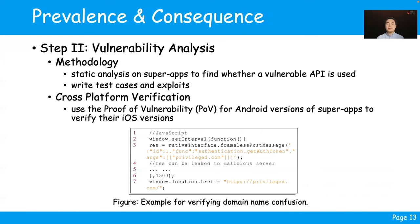Our analysis of domain name confusion is conducted in two steps. First, we use static analysis to determine whether the super app uses a vulnerable WebView event handler. Then, we write test cases and exploits to trigger the vulnerability. We also use proof-of-concept exploits to verify whether the vulnerability exists in the iOS version. This figure illustrates an example to verify the vulnerability for onPageStarted. Note that we have different exploit codes when the WebView Chromium version is greater than 72. More details about vulnerability behavior across different WebView versions are in our paper.